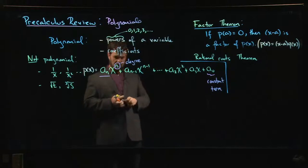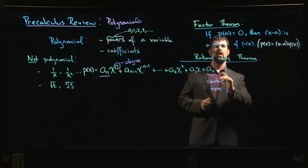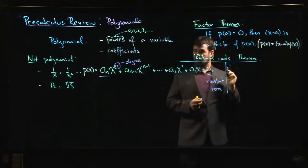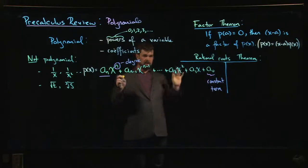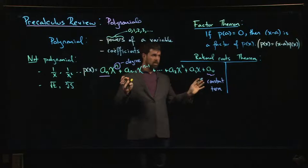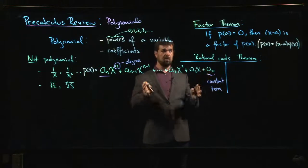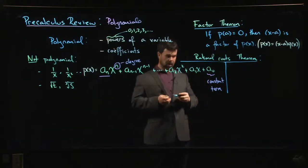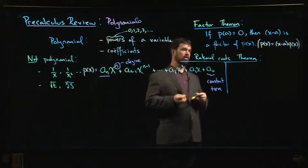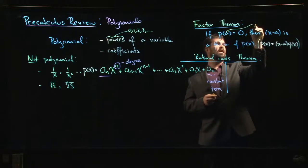But it still leaves you with one question: how do you know which numbers to plug in? There's lots of possibilities. There are some other more advanced results that tell you something about where to look for possible numbers you could plug in. These numbers that give you zero, by the way, have a name. If p(a) gives you zero, you would say that a is a root of your polynomial.